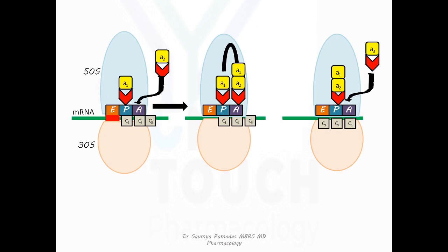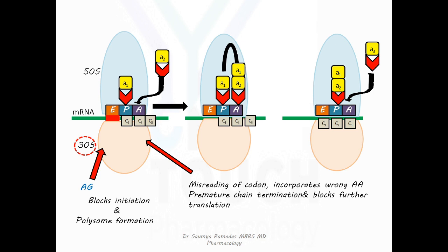Once inside the cell, the aminoglycosides bind to the 30S ribosome and block initiation and polysome formation. They also cause misreading of the codon and incorporate wrong amino acids causing premature chain termination and sometimes abnormally long peptide chains and thus block further translation process. So, basically aminoglycosides are protein synthesis inhibitors.